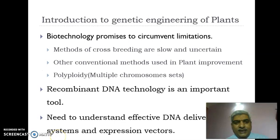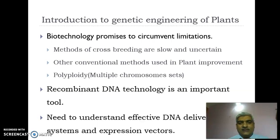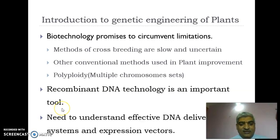There are many conventional methods used in plant improvement, but they have certain limitations. Methods of cross-breeding are slow and uncertain, and we also have the problems of polyploidy. Biotechnology promises to circumvent these limitations. Recombinant DNA technology is an important tool extensively used in the generation of transgenic plants. There is a need to understand effective DNA delivery systems and expression vectors for successful transgenic plants.